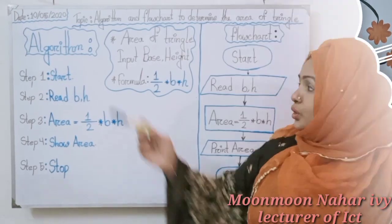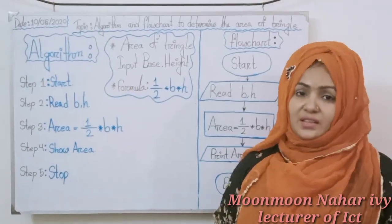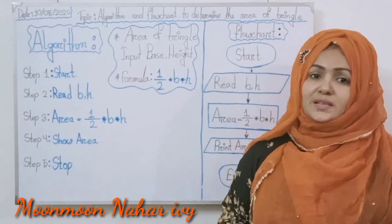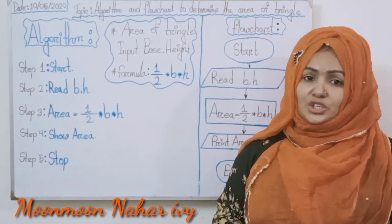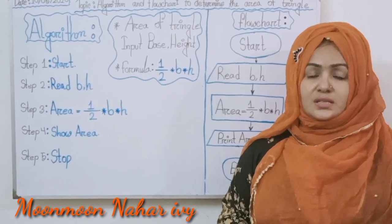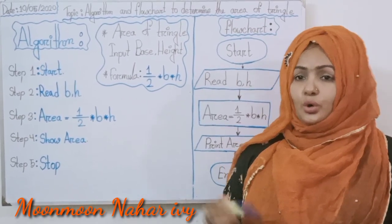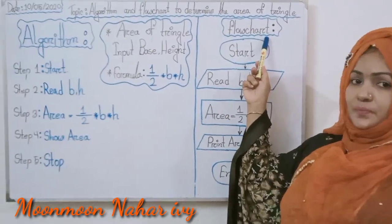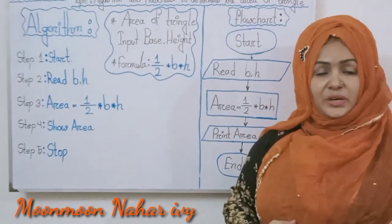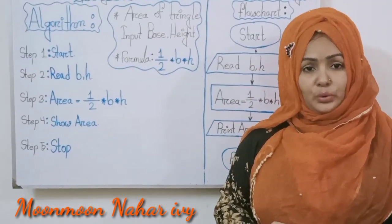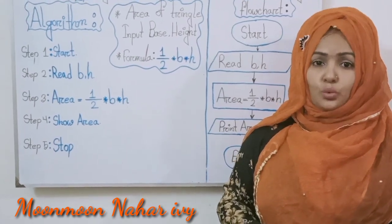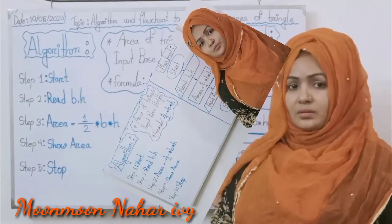Today, I am going to discuss about algorithm and flowchart to determine the area of a triangle. Now, what is algorithm? We know algorithm as a set or list of instructions for carrying out some process step by step. Now, what is flowchart? We know the picture which depicts how a program or a system will work is known as a flowchart.